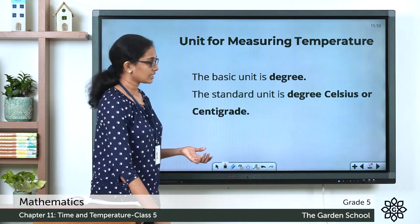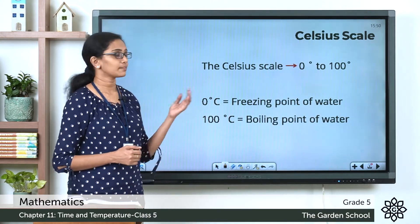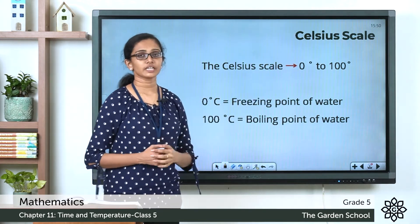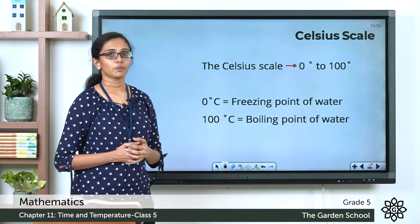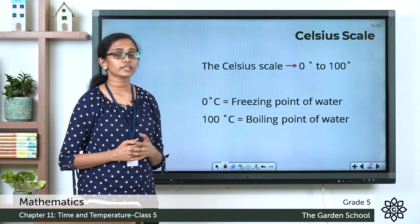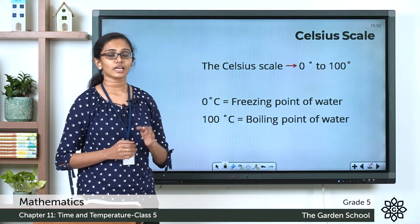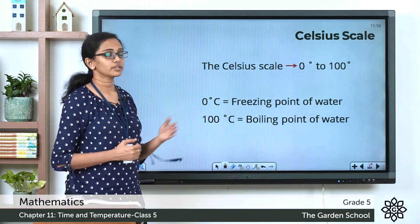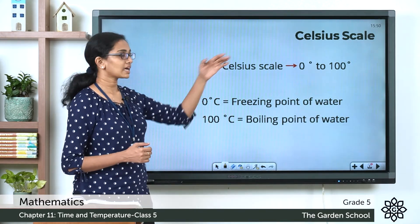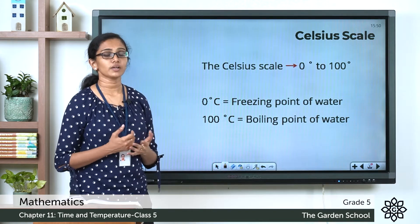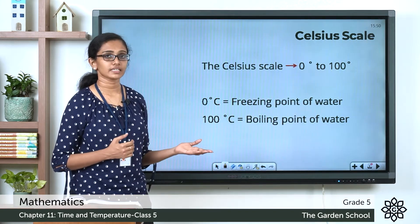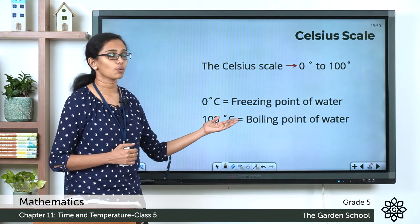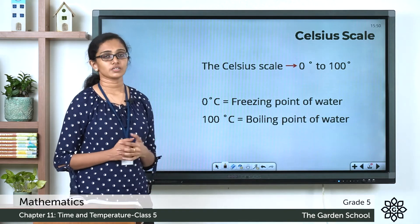In the Celsius scale, the temperature is marked from 0° to 100° on a thermometer. Water freezes at 0°C, and hence 0°C is the freezing point of water according to the Celsius scale. Water boils at 100°C, and hence 100°C is the boiling point of water according to the Celsius scale.